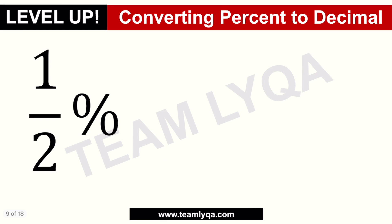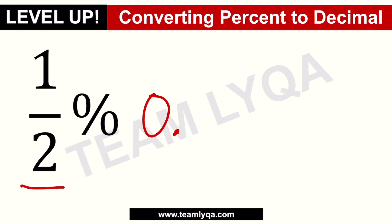What do we do? In this case, we first deal with the fraction. Since one-half is 1 divided by 2, that equals 0.5. So we now have 0.5 percent. But we're not done yet because it's still not a decimal.